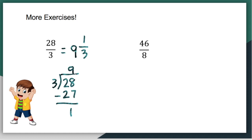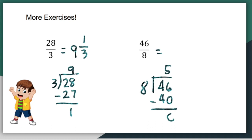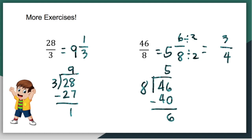And the last one: forty-six over eight. How many eights are there in forty-six? We have five. Five times eight is forty and we got a remainder of six. So we have five wholes and a left over of six over eight. Now, take a look at our answer — six-eighths is not in its simplest form, so we still have to find their common factor, which is two. Six divided by two gives us three; eight divided by two is four. Don't forget the whole number. So five and six-eighths is equal to five and three-fourths.